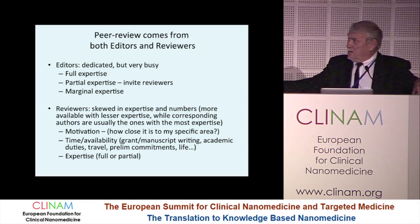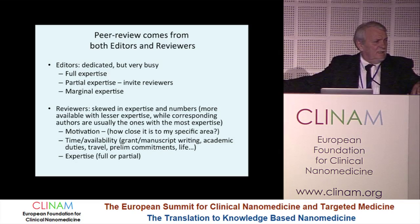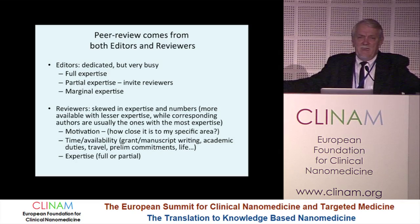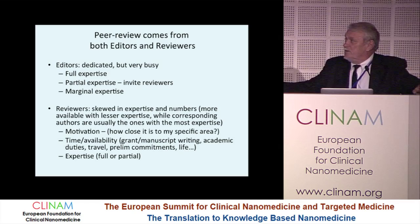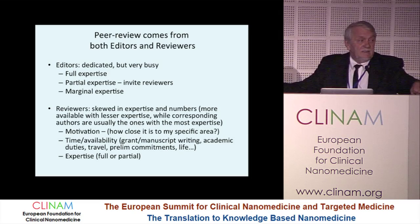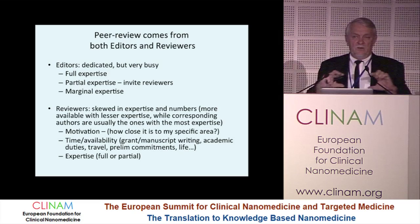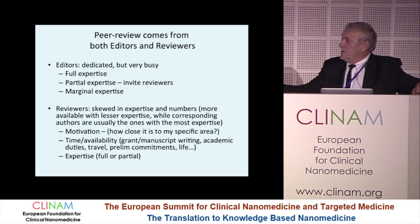Peer review comes from both editors and reviewers. Editors are dedicated but very busy. They may have full expertise in the area and can make a decision right away, positive or negative. They may have only partial expertise — nobody understands every bit of nanomedicine — so we have to talk to people who are experts. There is a skew in expertise: there are many more lower-expertise reviewers and far fewer higher-expertise ones. Who is the corresponding author? Usually the top researcher. Who is reviewing them? Usually the middle or lower tier who has time.